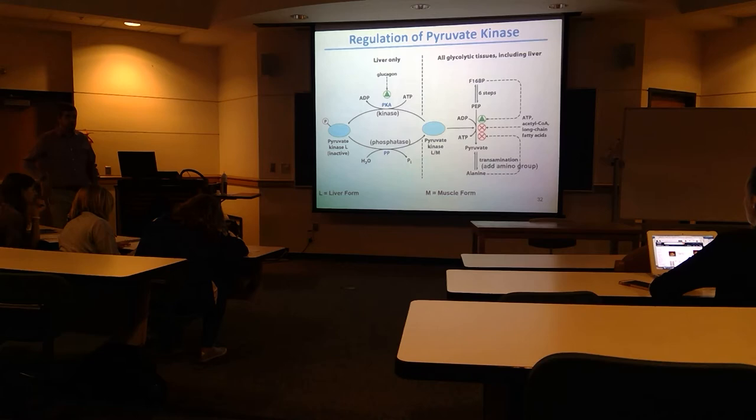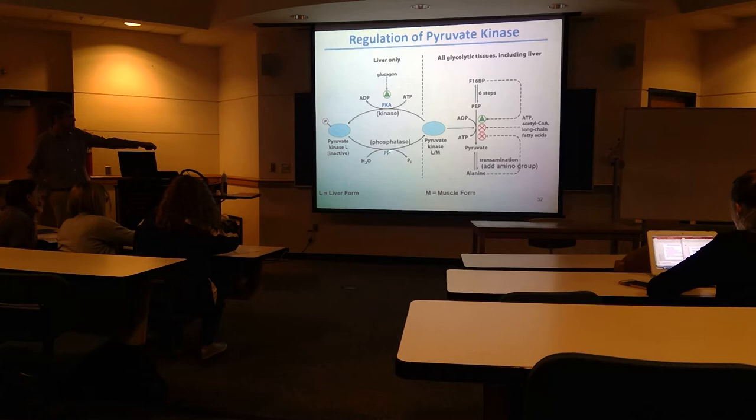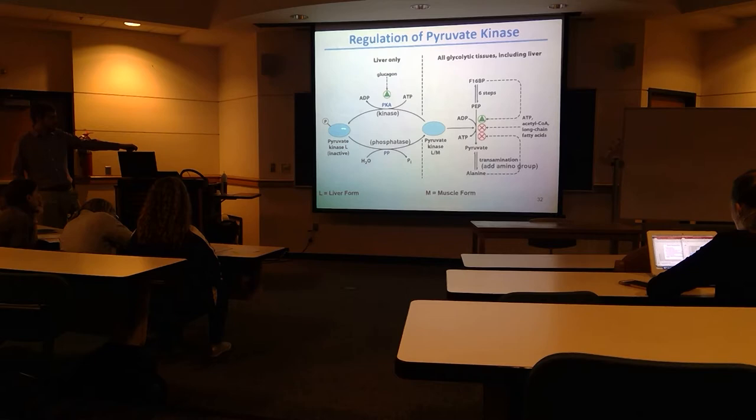A phosphatase can remove this phosphorylation under conditions where there's not a lot of glucagon. So those levels go back up, and then you want to turn back on and activate pyruvate kinase by getting rid of that phosphorylation — that's what the phosphatase does. That's just for the liver form.